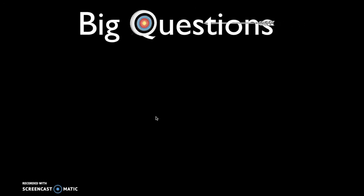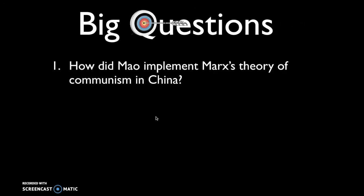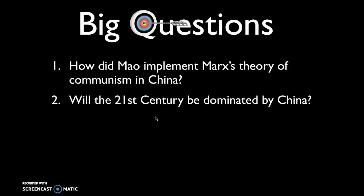As a result of watching this video, you should be able to answer two big questions: first, how did Mao implement Marx's theory of communism in China; and second, will the 21st century be dominated by China? Thanks for watching.